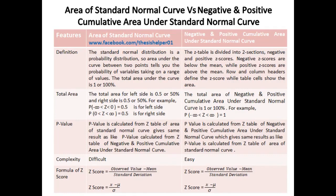The standard normal distribution is a probability distribution, so the area under the curve between two points gives the probability of a variable taking on a range of values. The total area under the curve is 1 or 100%. The Z table is divided into two sections: negative and positive Z scores. Negative Z scores are below the mean, while positive Z scores are above the mean. Row and column headers define the Z score while table cells show the area.